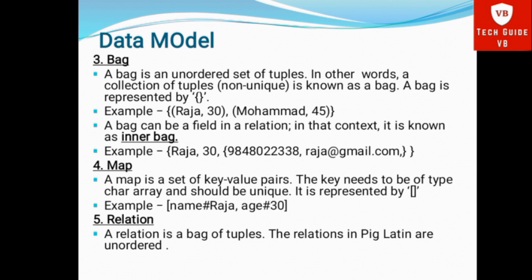Fourth, Map. A Map is a set of key-value pairs. The key needs to be of type CharArray and should be unique. It is represented by brackets. For example, [Raja#name#Raja, age#30]. Fifth, Relation. A Relation is a Bag of Tuples. The relations in Pig Latin are unordered.